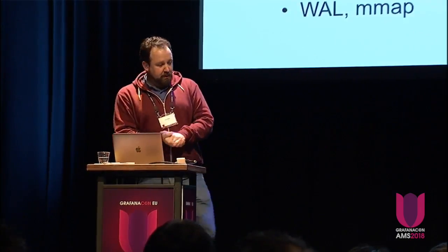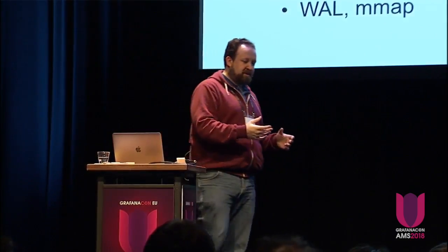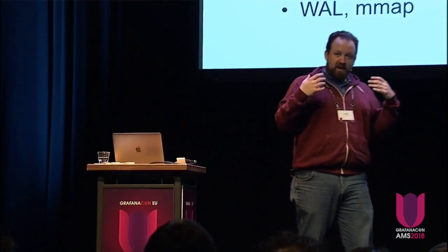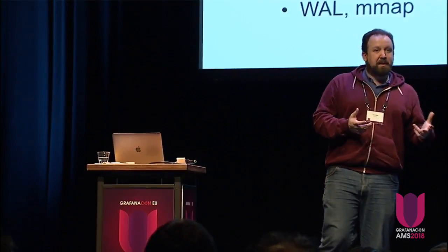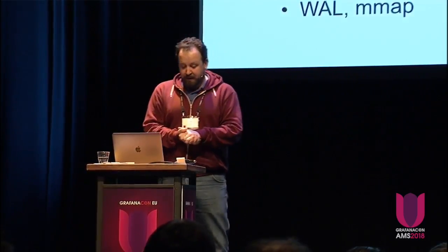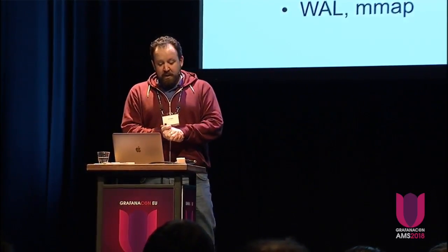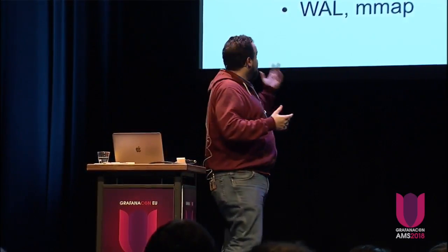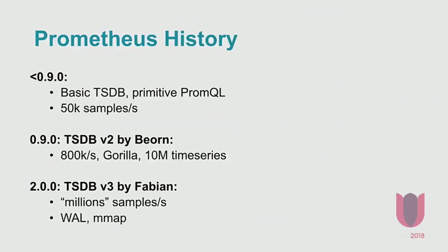In 0.9 and beyond, one of the core Prometheus developers built a new time series back-end, heavily inspired by the Gorilla paper, like the Metrics Tank project. With this, we managed to get to almost a million samples a second. We had some architectural limitations, so you could really only have about 10 million time series.